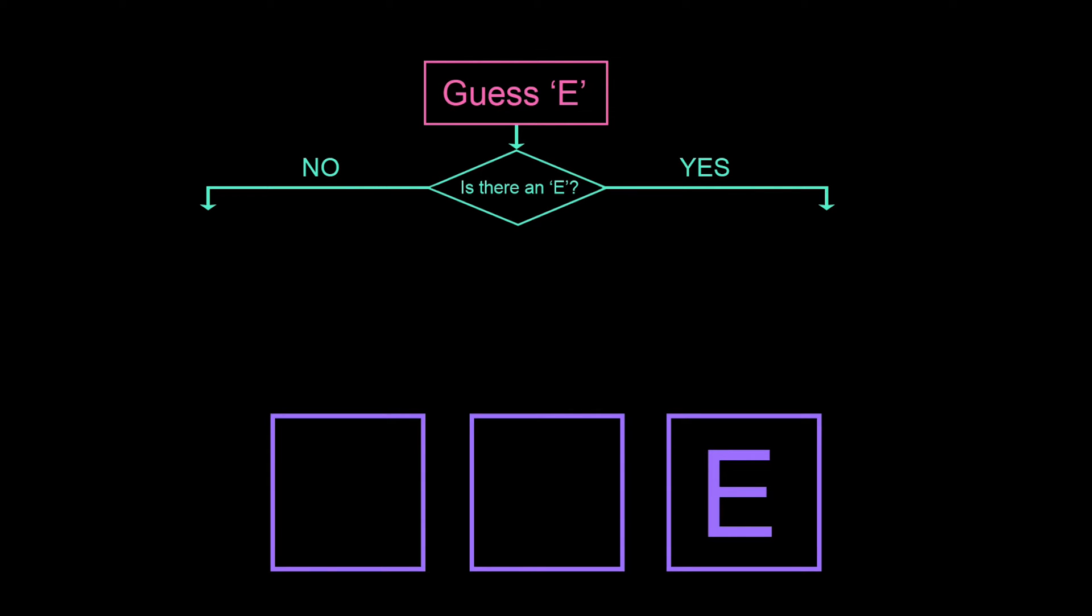With our word game, we might still start with the step that guesses the letter E, but then we might pause here to consider the information we have available, and then decide what to do next based off of it. We'll use a control flow diagram to model all the different paths that are available. Here we ask, is there an E?